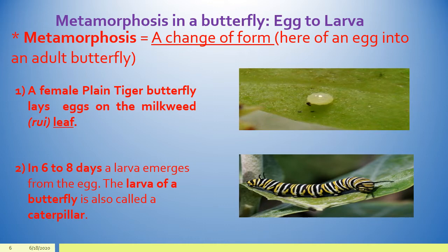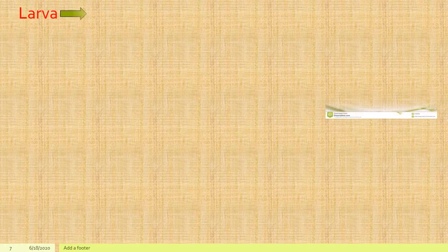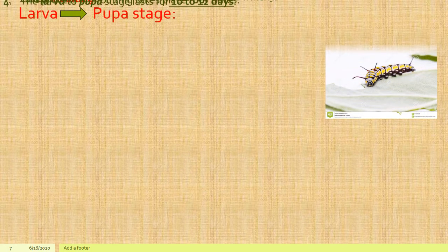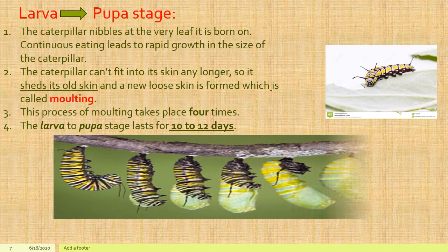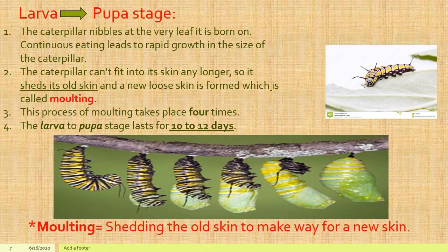In six to eight days, the larva emerges from this egg. The larva of a butterfly is also called a caterpillar. The caterpillar coming out of an egg is so hungry that it continuously nibbles at the very leaf it is born on. This continuous eating leads to rapid growth in the size of the caterpillar. The caterpillar can't fit into its old skin, so it sheds its old skin and a new one comes in its place.